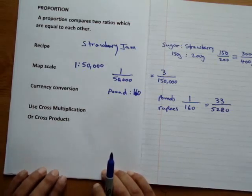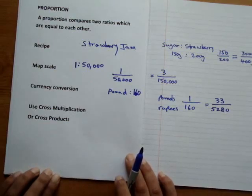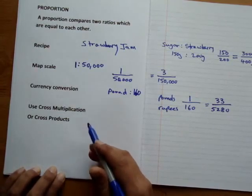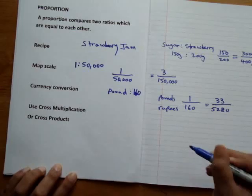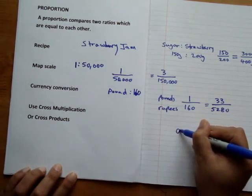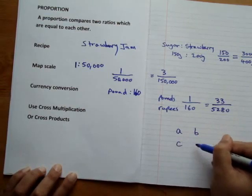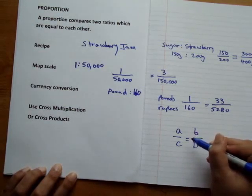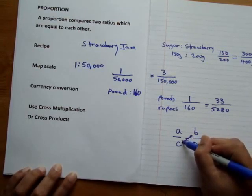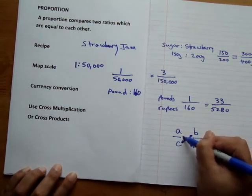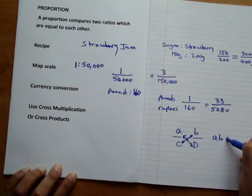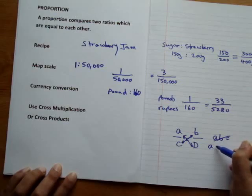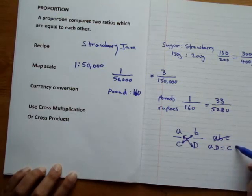When solving questions using proportions, we use what is called cross multiplication or cross products. If we have a proportion a over b equals c over d, we multiply across the equal sign: a times d equals c times b.